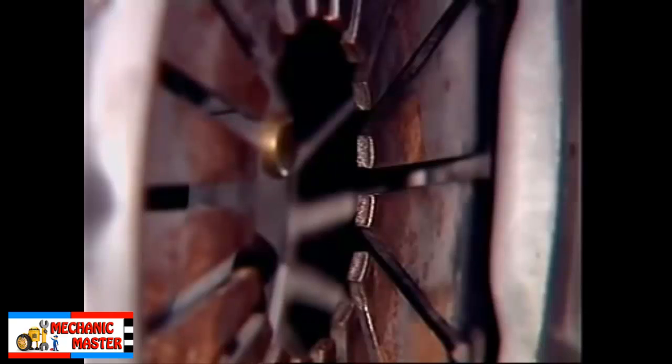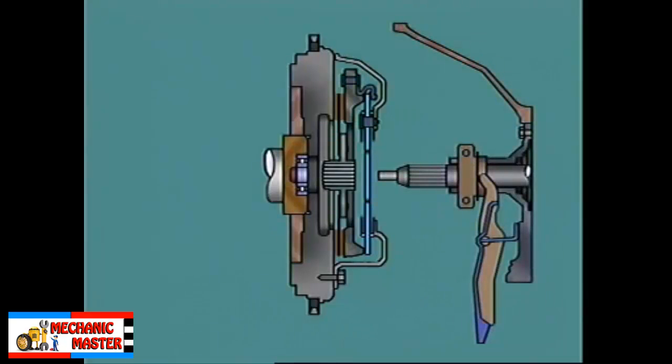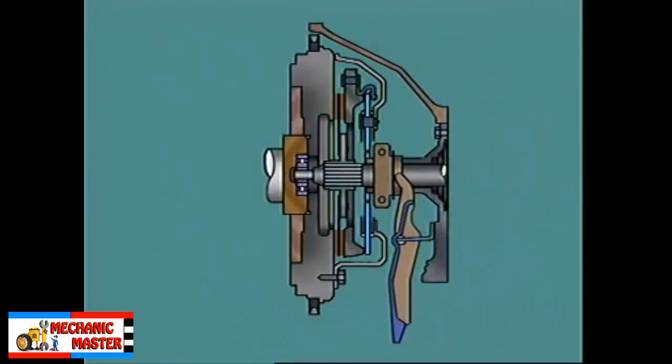The transmission input shaft passes through the center of the pressure plate. Its parallel splines engage with the internal splines of the central hub on the friction disc. With engine rotation, torque can now be transmitted from the flywheel.